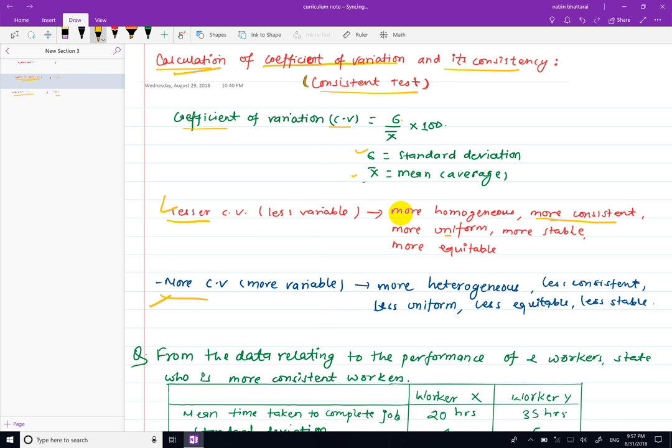When the CV value or data is lower, it means more consistent, more uniform, more stable, more equitable, more homogeneous. When we have data or distribution with less CV, it's more consistent, more stable, more uniform. When we calculate more CV, the distribution or data is less consistent, less uniform, less equitable, less stable, or more heterogeneous.